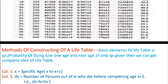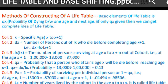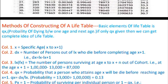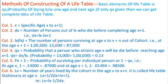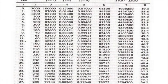Method of constructing a life table: the basic element is qx — the probability of dying between age x and x+1. If only qx is given, we can get a complete idea of the life table. The first column is x, representing the age interval x to x+1.